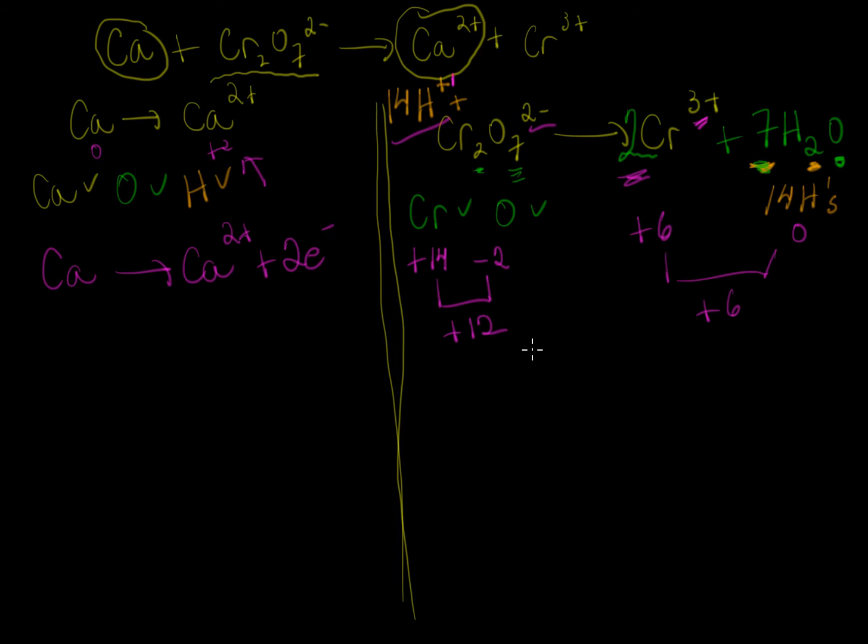We need to bring this value down to match. We add electrons to the more positive side. We need to subtract 6 from this +12 to give us equal charge. How do we add a -6? We can't, but we can add electrons which are negatively charged. We want to add 6 electrons.